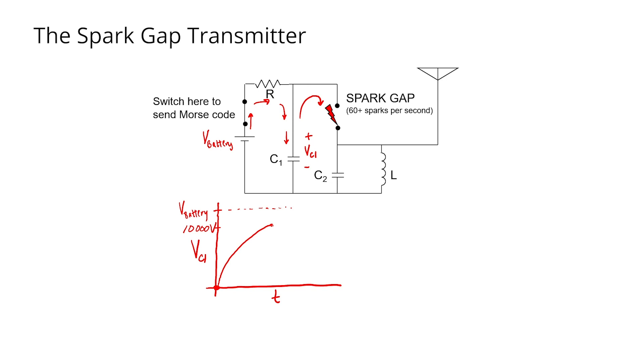and capacitor C1 will very quickly discharge into capacitor C2 until these capacitors are at equal voltage. At this point, we now have the tank circuit charged up. Once capacitor C1 has been discharged,